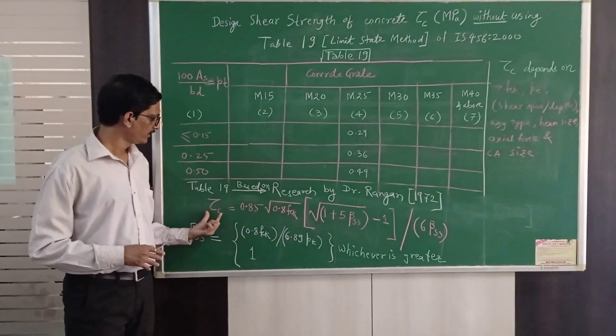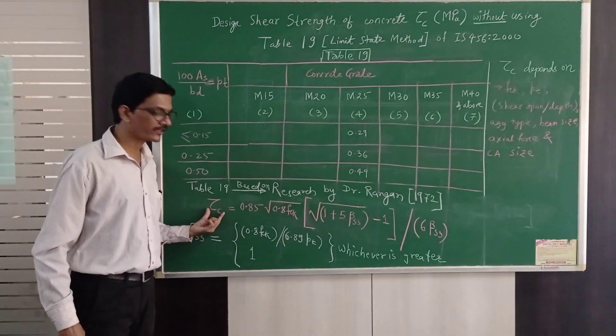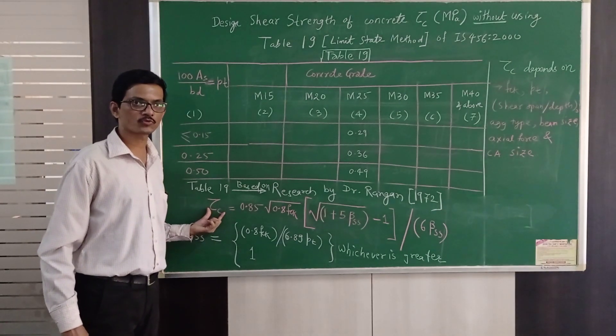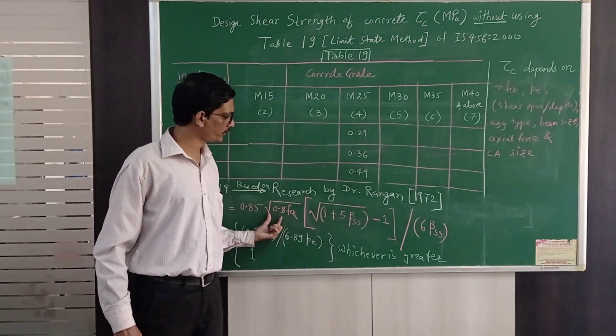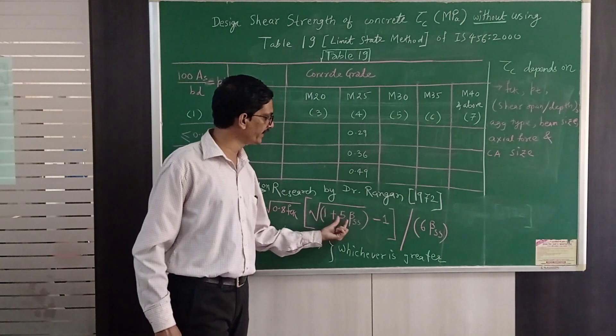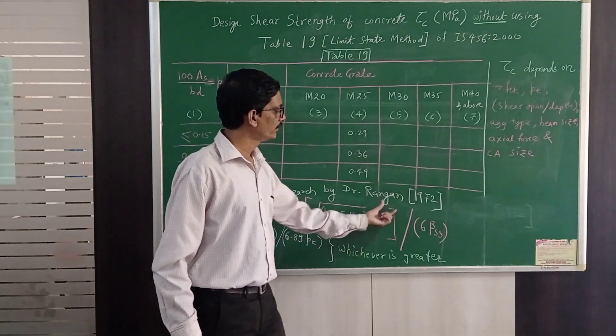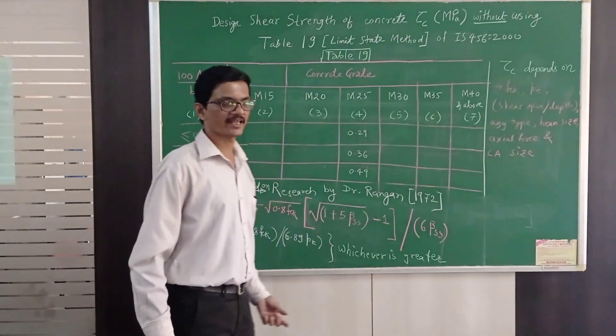He said that the design shear strength of concrete tau c in Newton per mm square or mega Pascal is 0.85 root of 0.8 fck into bracket 1 plus 5 beta ss minus 1 divided by 6 times beta ss.